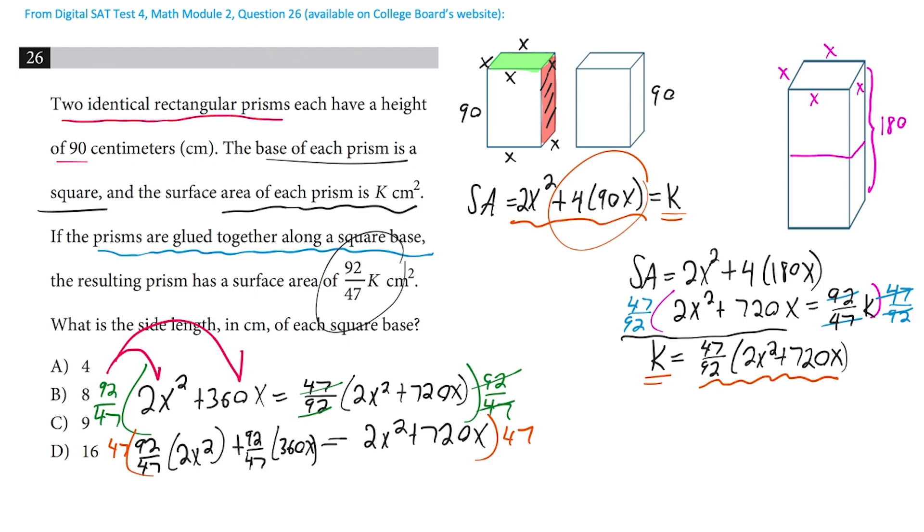So let's write that part: 92 times 2 is 184. Don't forget the x squared. And now when we multiply by the 47 here, the 47s are canceling, leaving us with 92 times 360x. And 92 times 360x on a calculator is equal to 33,120x.